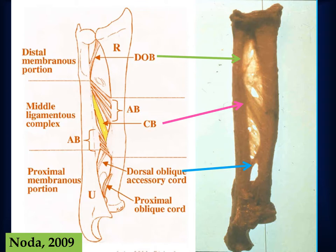The distal membranous portion contains the dorsal oblique bundle, which is important for distal radial ulnar joint stability and plays a role in distal radial fractures. Finally, the proximal membranous portion contains the proximal oblique cord and the dorsal oblique accessory cord, which function to help stabilize the proximal radial ulnar joint.